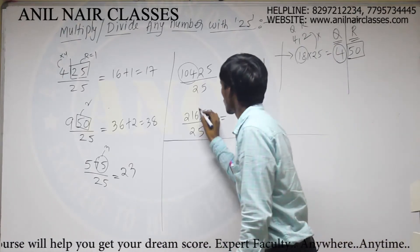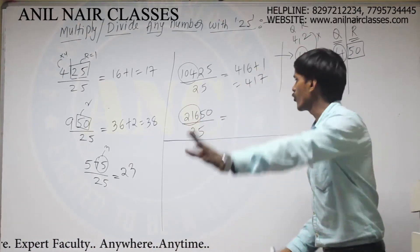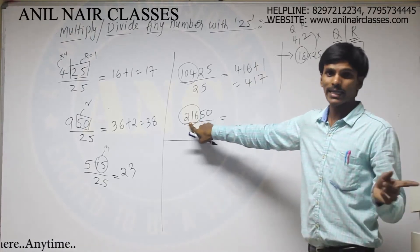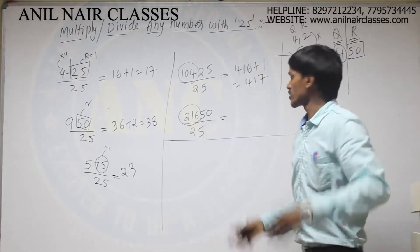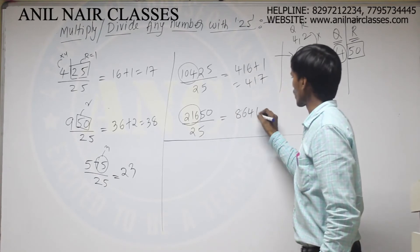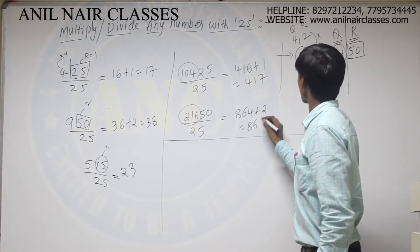So similarly 216. 216 into 4. 200 times 4 will be 800, total 864. 864, remainder will be 2. 866.